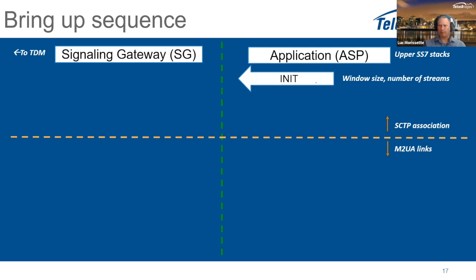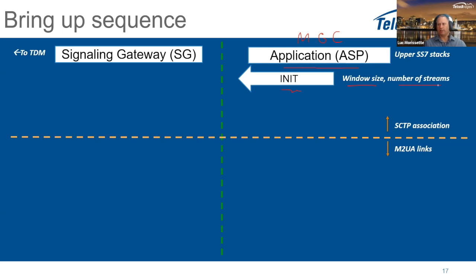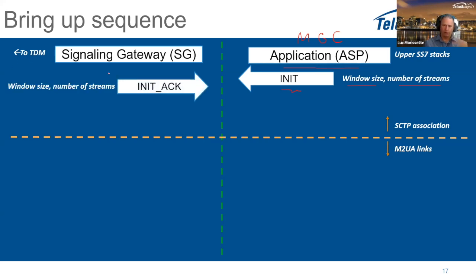For the SCTP association, the initialization is always done from the application portion — called ASP in the SIGTRAN world. In our case it's the MGC that sends the INIT to connect to the other network. The INIT contains two important pieces of information: the window size for queuing received packets, and the number of streams. These are auto-negotiated with the signaling gateway, matching window sizes and number of streams. If they don't match, it can sometimes cause problems.